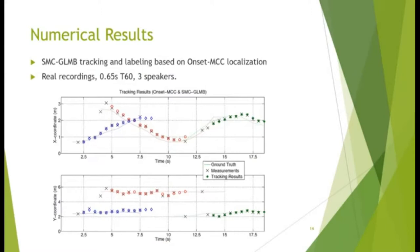This figure shows the tracking results using GLMB provided with the location estimate from the onset MCC method. We use the estimates for adaptive target pulse. Note that this scenario uses real recordings in a room of 0.65 seconds T60. We can see there are misdetections. However, each speaker is correctly labeled and they form continuous tracks respectively.